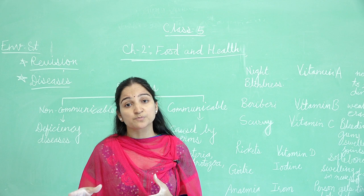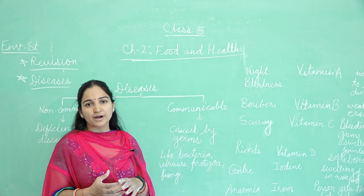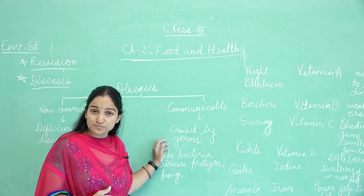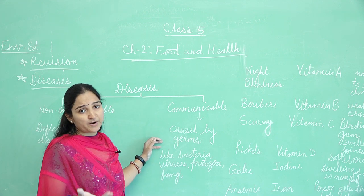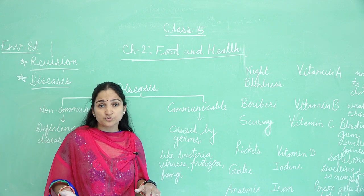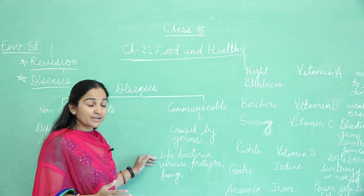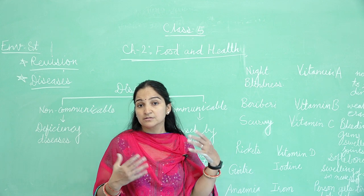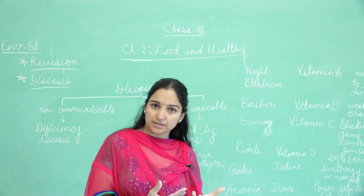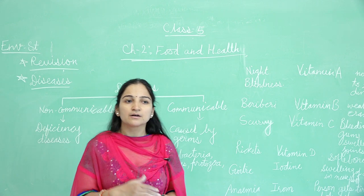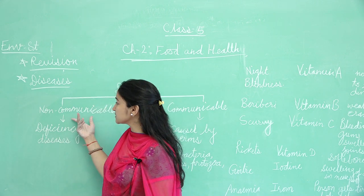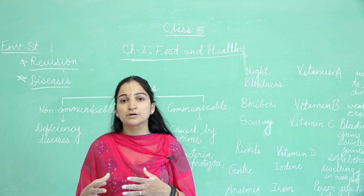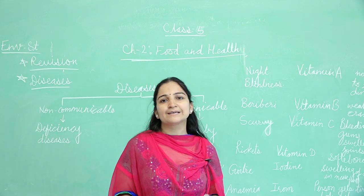We can identify which germ we can see in the laboratory and under the microscope. Communicable disease is caused by germs only, and spreads through germs. The agents include bacteria, protozoa, virus, and fungi. We will discuss communicable disease spread in the next video. For now, we discussed about the non-communicable disease, which is also known as the deficiency disease.